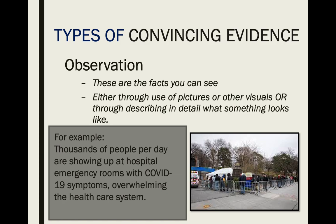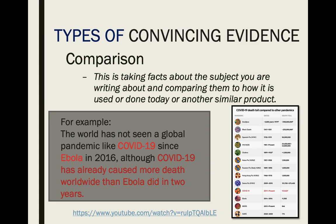Observation is good but you have to be careful — people can trick your eye. Comparison I do think is effective. Your strongest types again are expert testimony and statistics. I'd say comparison is your next strongest, and then observation and prediction. Now that you've watched this, you're welcome to watch it again or move on to the next folder and take your Google quiz. Remember, look for these evidences as you're researching so that your argument is strong.